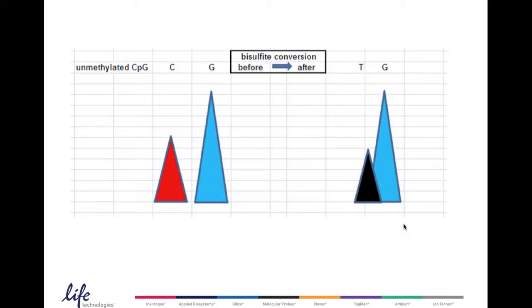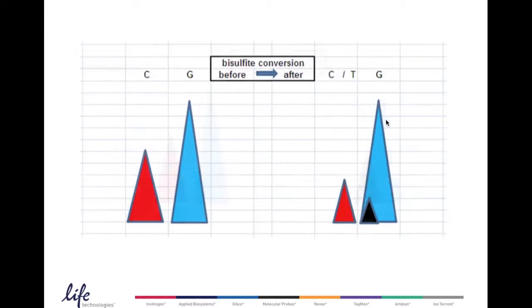In case of an unmethylated CpG dinucleotide, we would observe a change to a black T peak, and we would still see the blue G peak over here. Now, in mixed samples or in incomplete or partial methylation, we would see the presence of two peaks, a red C peak here and a black T peak over here. The question is now how much methylation has occurred at a particular locus of interest.